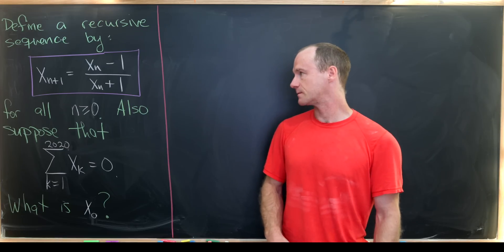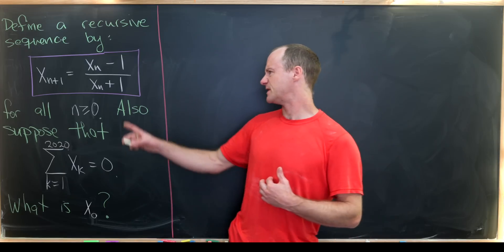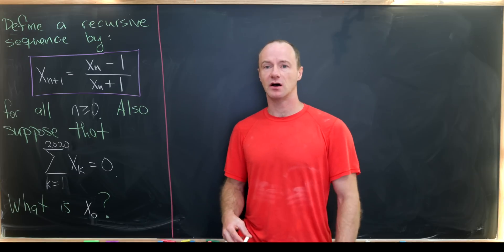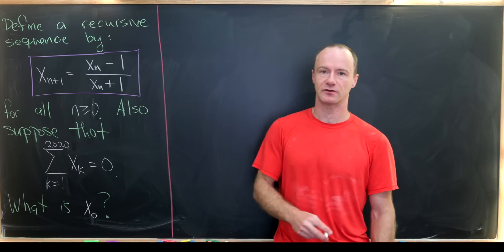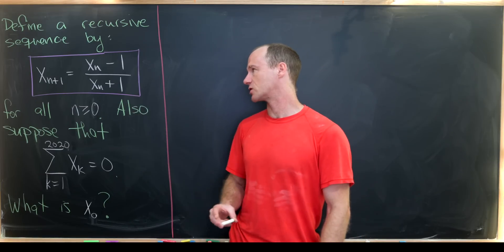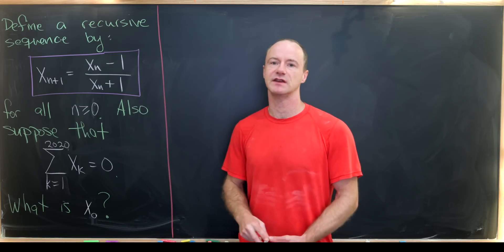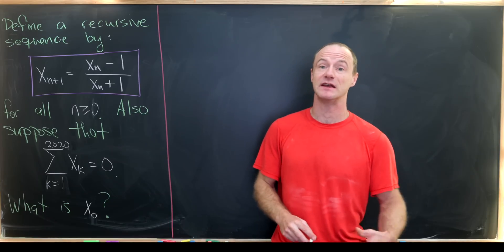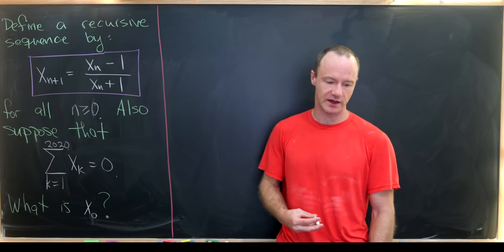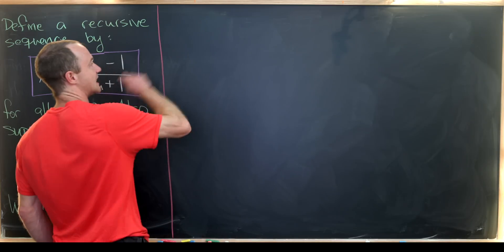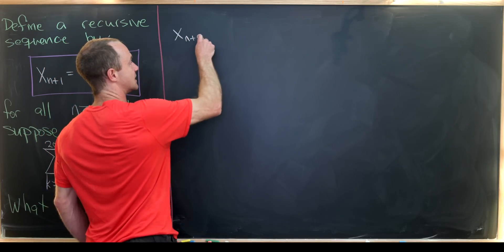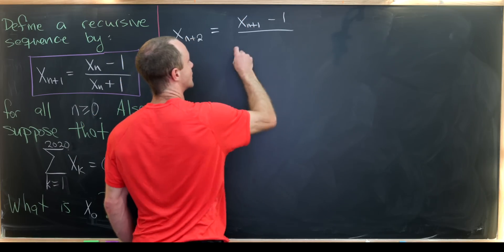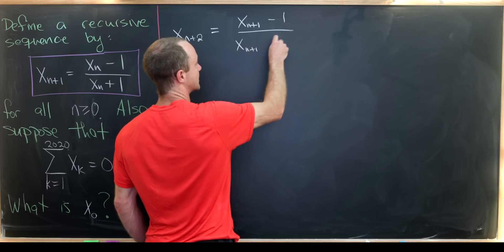The first thing we'll do is play around with this recursion to make some sort of deeper linear recursion out of this nonlinear recursion. We've got this one-step nonlinear recursion with a division. Could we maybe make a two-step, three-step, or four-step recursion that is linear and thus easier to deal with? Let's start by looking at x_{n+2}.